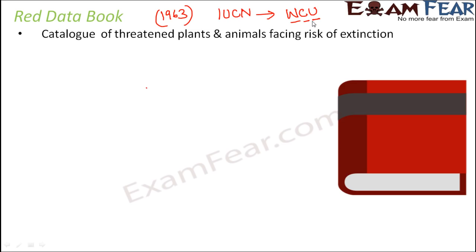The red data book lists all plant and animal species facing extinction. Certain species are at higher risk and certain at lower risk of extinction. When you know those levels, you can take actions accordingly to prevent a particular species from going extinct.